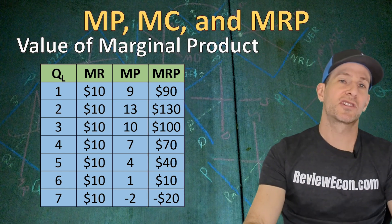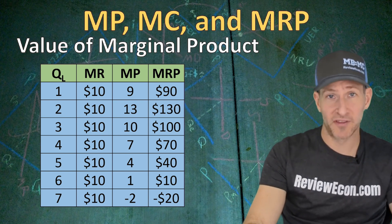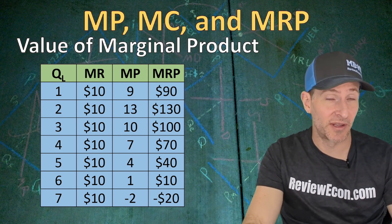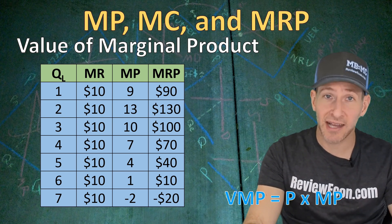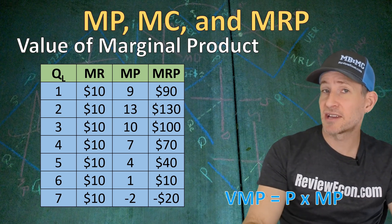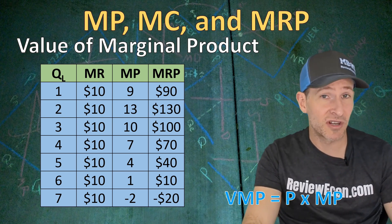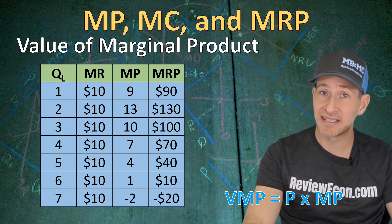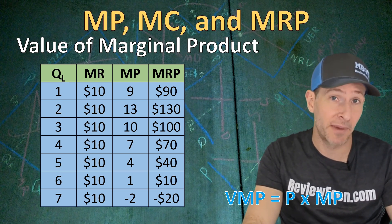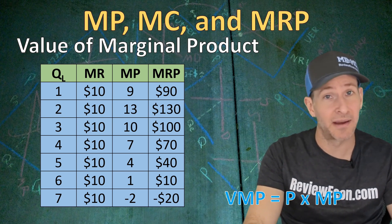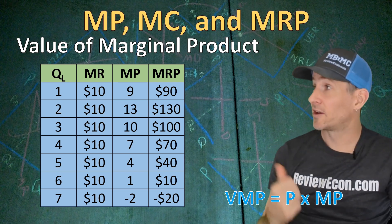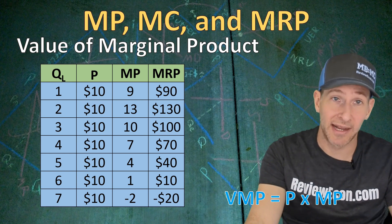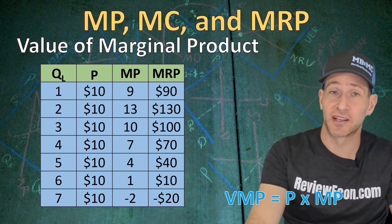You could also see a question referring to the value of the marginal product, which is a slightly different formula: it's the price of the product times the marginal product. But most of the time, the value of the marginal product and the marginal revenue product are equal, because most firms sell into a perfectly competitive product market where price and marginal revenue are equal. So on this chart, the marginal revenue is the price, because this firm is selling in a perfectly competitive market.